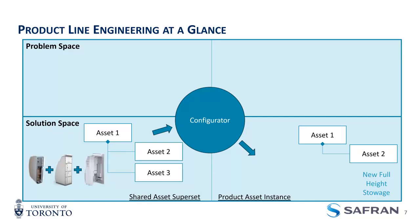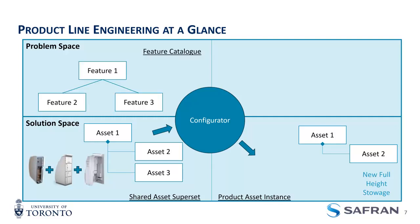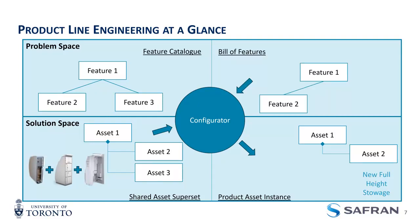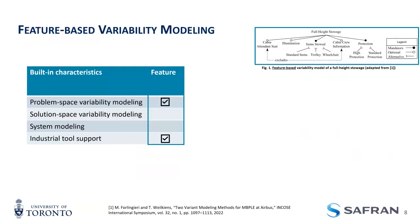To do that, you need an abstract problem space to help filter information. You define features as one way of doing that — when you select features, they're connected to your assets and result in a filtered version of your product line model. Feature modeling is the most popular approach; it's great at modeling the problem space but not so great at modeling the solution space. Because it's so popular, it has a lot of tool support.